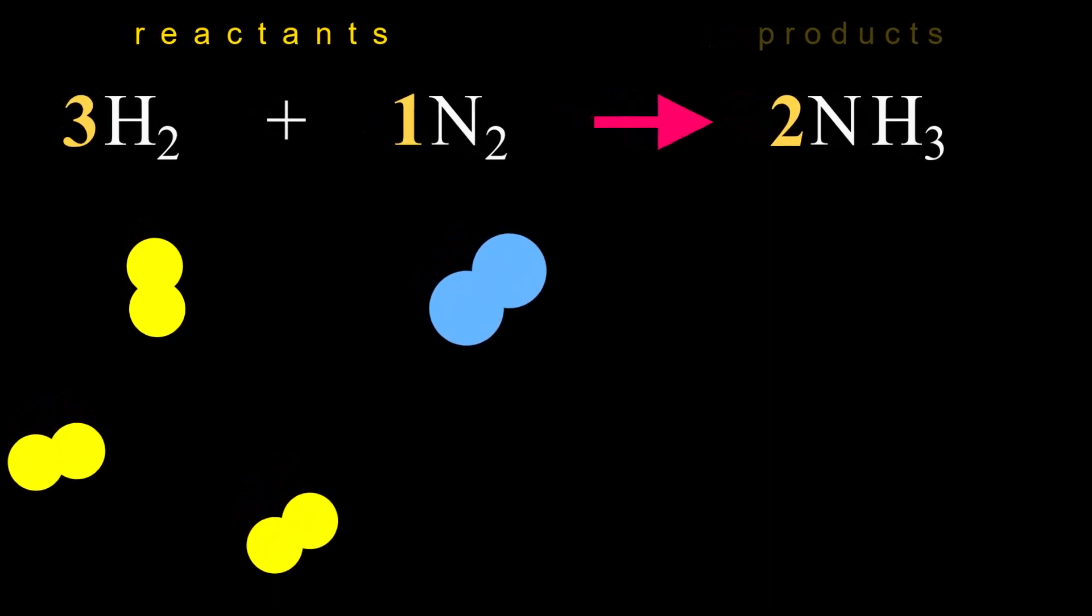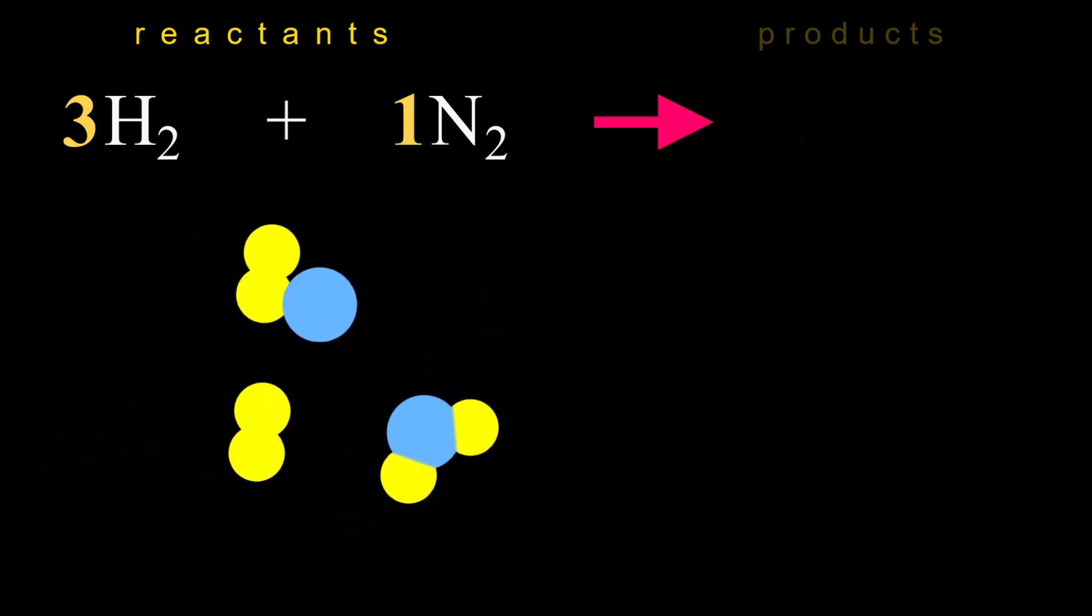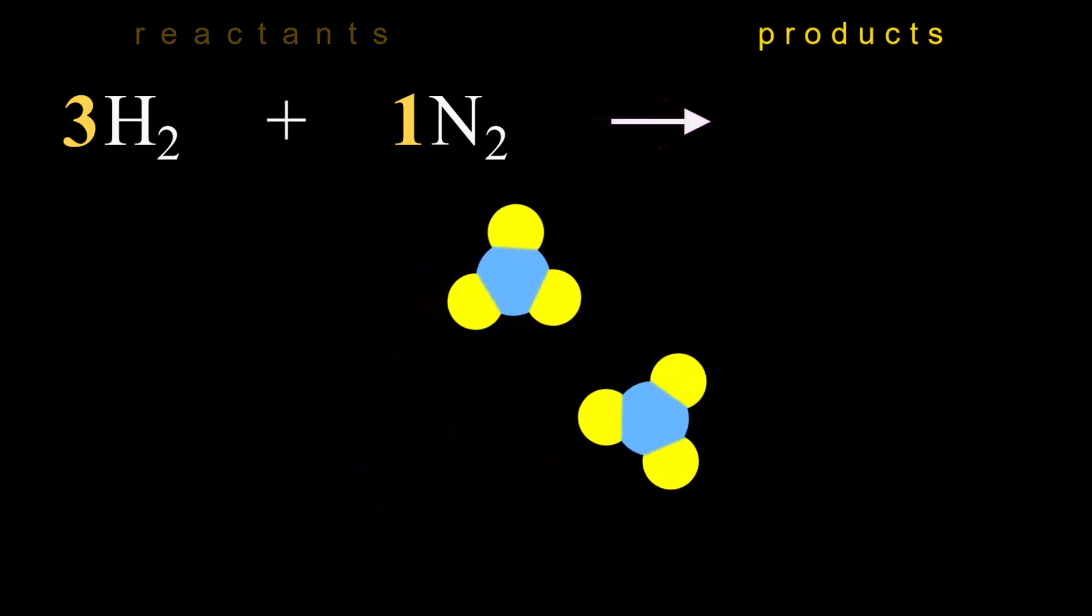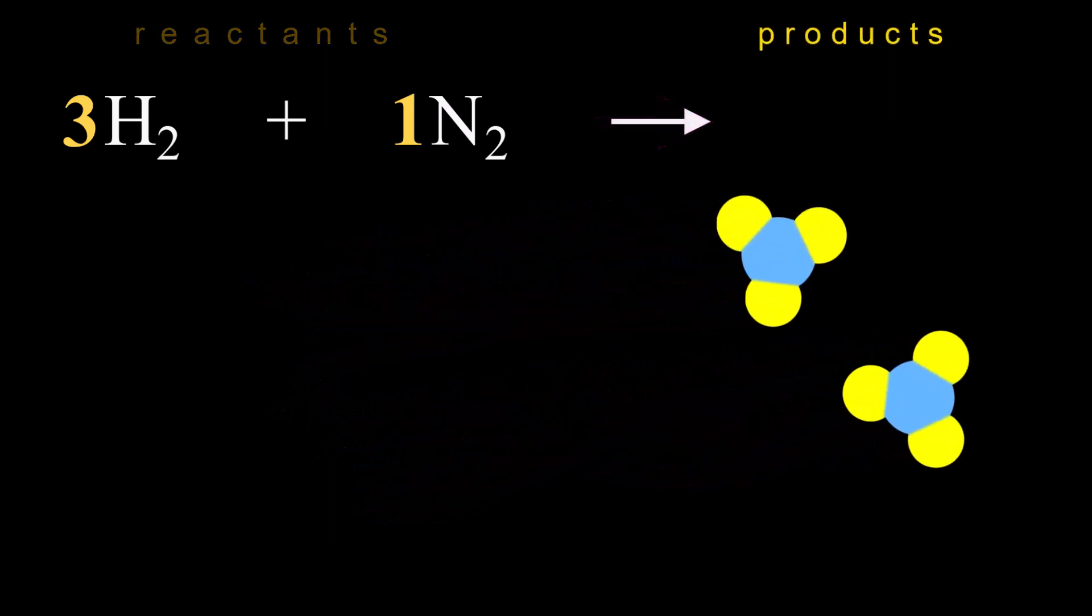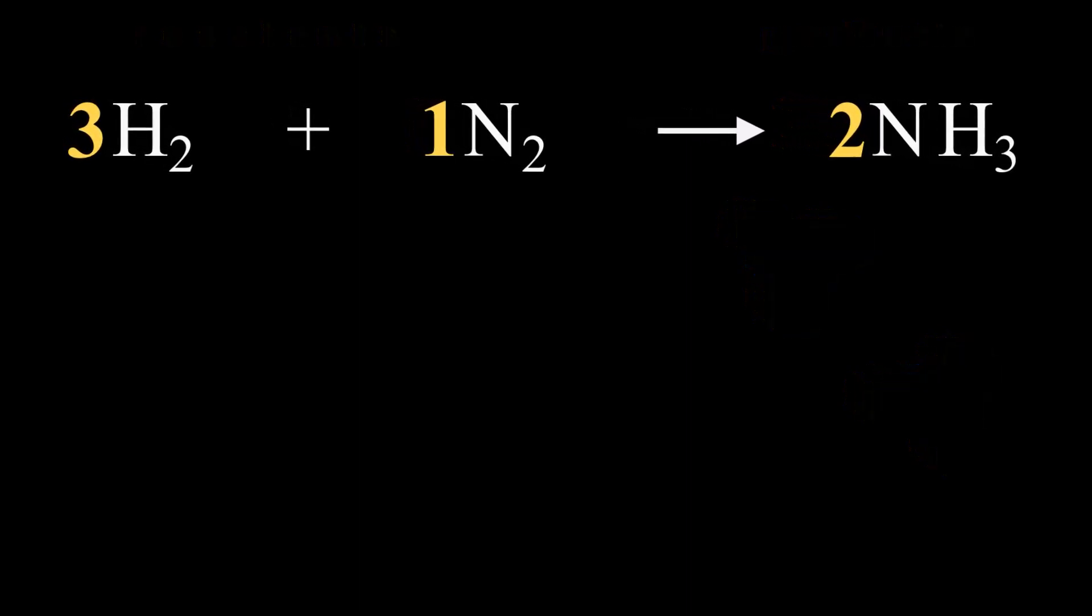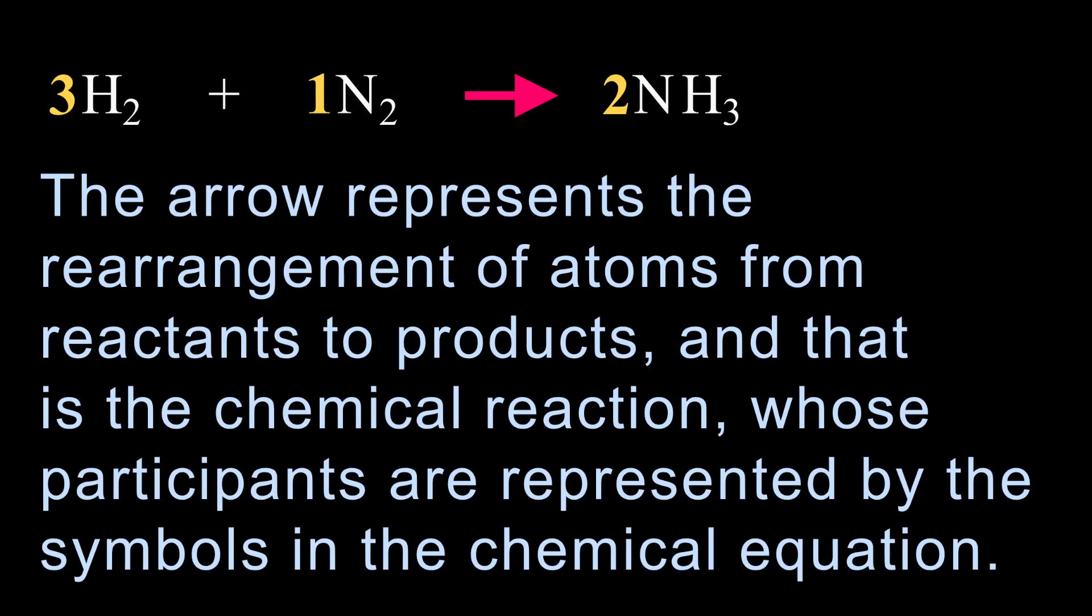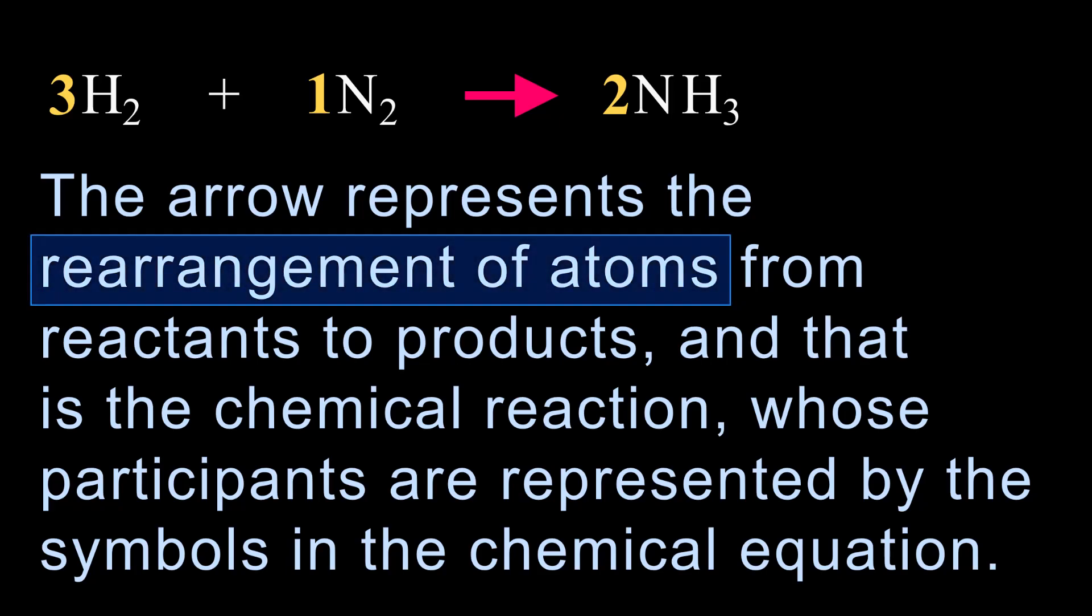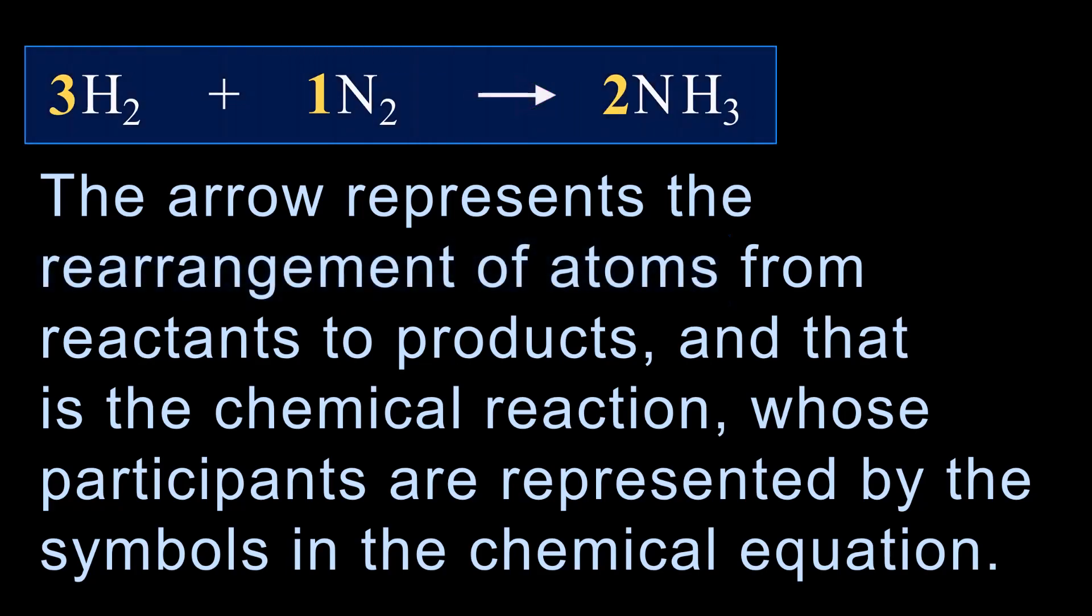So let's take a look underneath. In the case of this reaction, three hydrogen molecules collide with one nitrogen molecule, break apart, and rearrange into two ammonia molecules. So the reactants no longer exist. Their atoms have rearranged into product, which is shown by the equation. That is the chemical reaction, and the reaction is represented by the arrow. The arrow represents that rearrangement of atoms from reactants to products. And that is the chemical reaction, whose participants are represented by the symbols in the chemical equation.